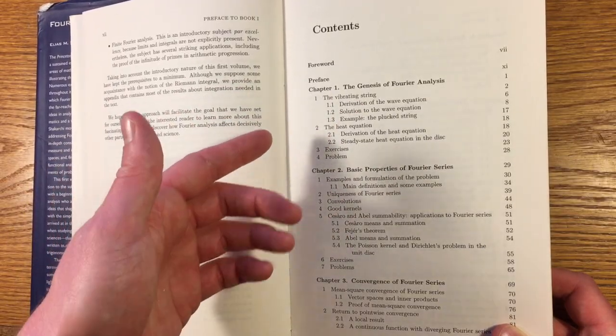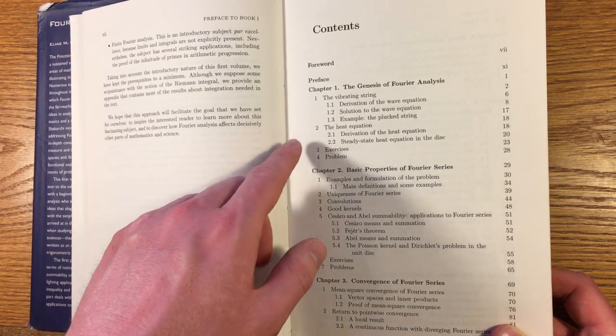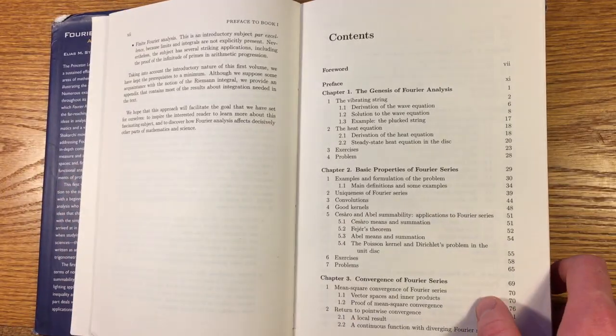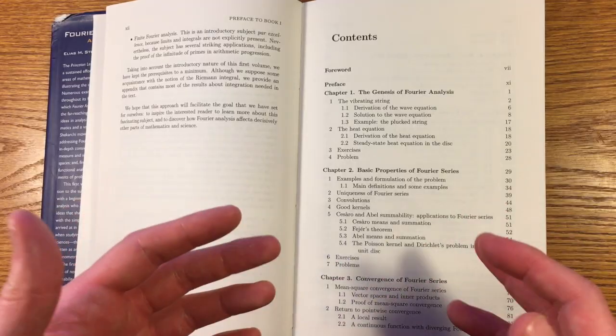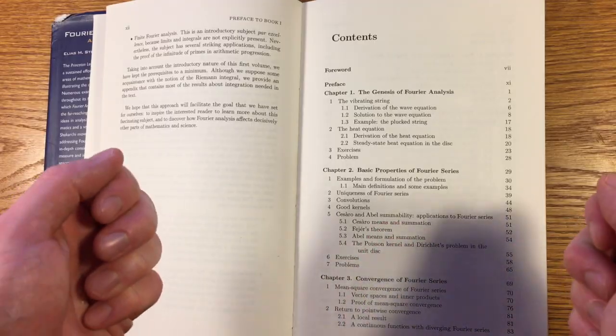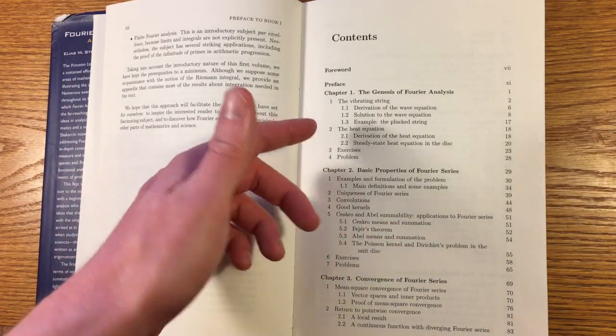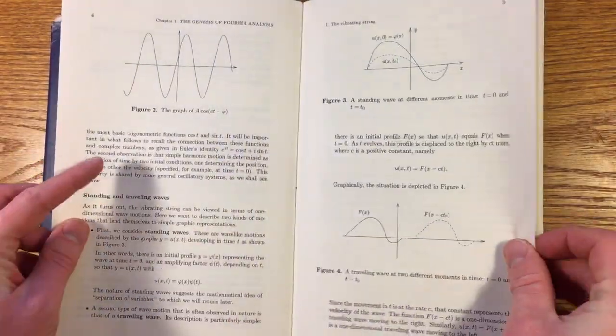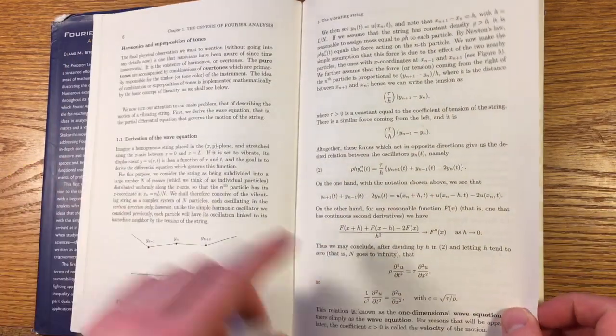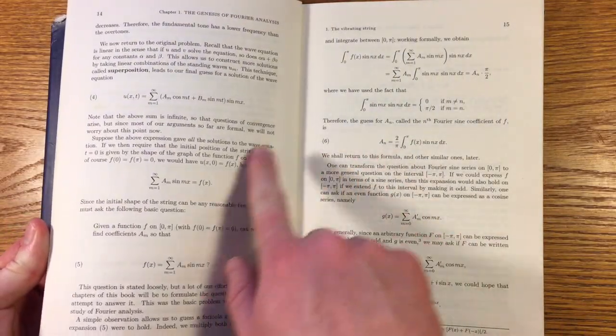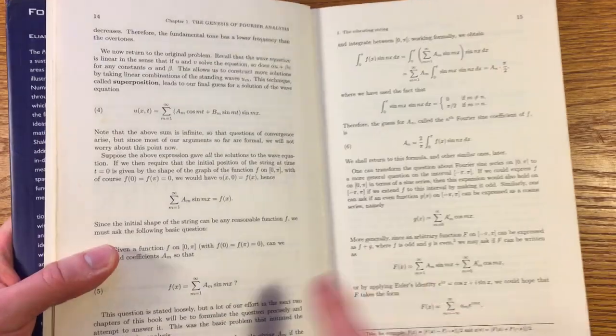It's called Fourier Analysis because Joseph Fourier was the first person to think that when he was trying to solve the heat equation in a rod, he realized he could solve it if any arbitrary function could be written as a sum of sines and cosines. And he, by making it an infinite series, by infinitely many terms, he was able to find an expression for that. He was the first to believe that that could be done. They take you through the derivation of the equation of a plucked string, or a vibrating string.